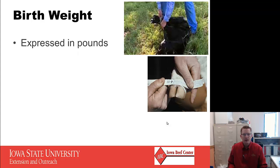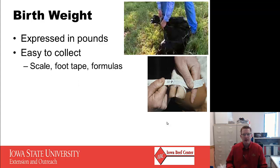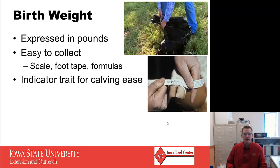Birth weight is expressed in pounds, taken at birth — usually within 24 hours, which is preferred. It's very easy to collect. The top picture shows a gentleman getting the legs together to hoist the calf on a scale, and the lower picture shows a foot tape — one developed right here at Iowa State by Marshall Rubel — used as a formula to generate birth weight for submission to a breed association. There are also other formulas available; the important thing is to be consistent in how they're collected.